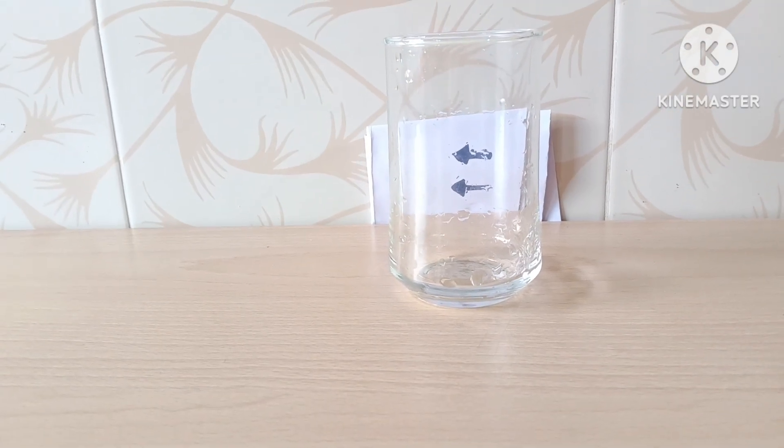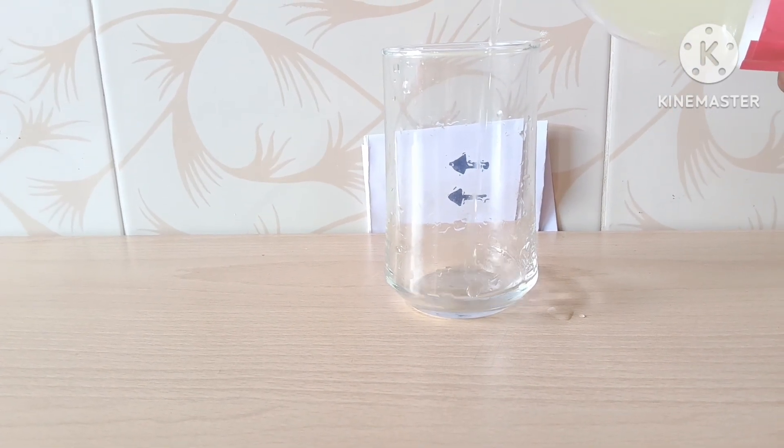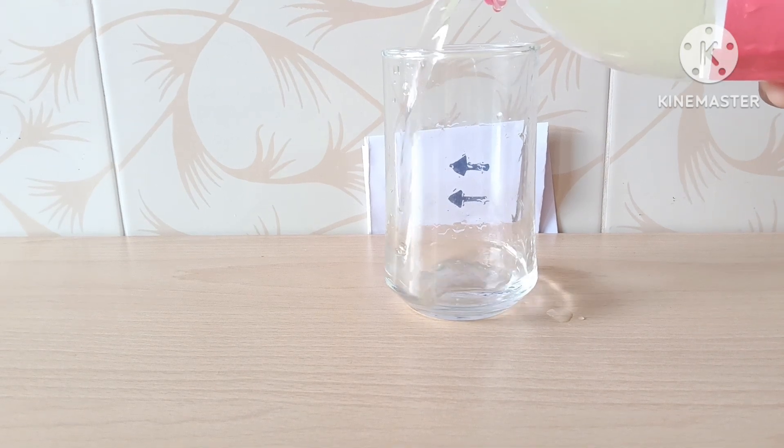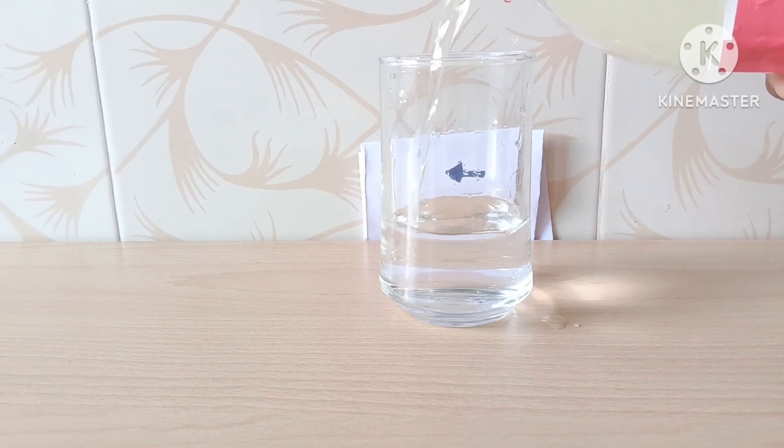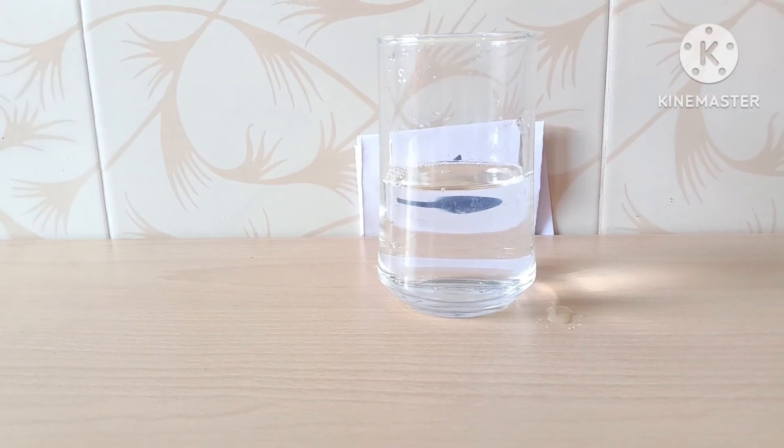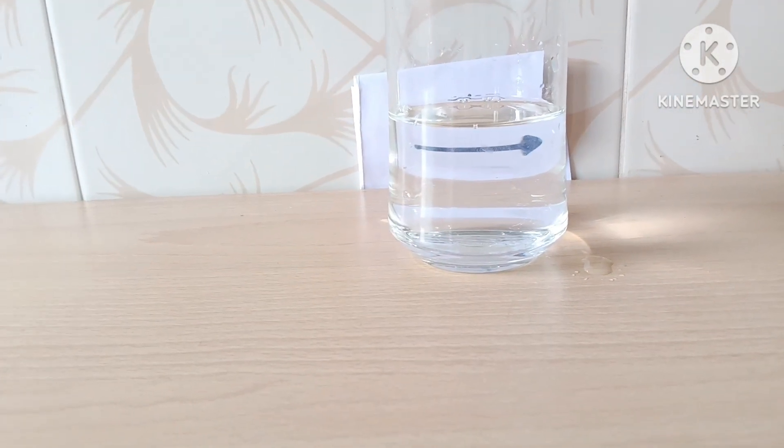Make sure the arrow is visible through the glass. Now slowly fill the tumbler with water. Observe the arrows through the tumbler.